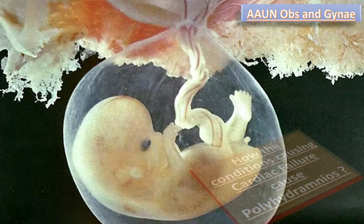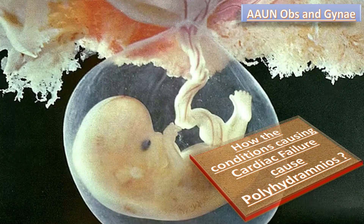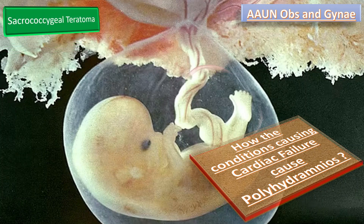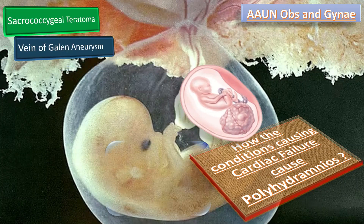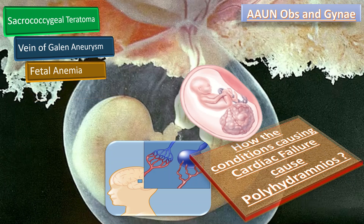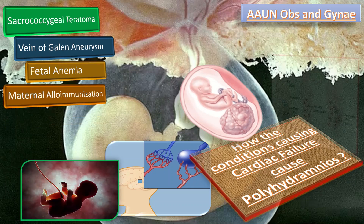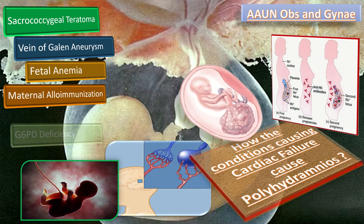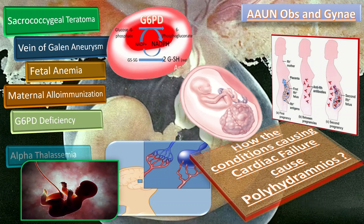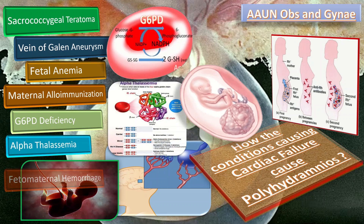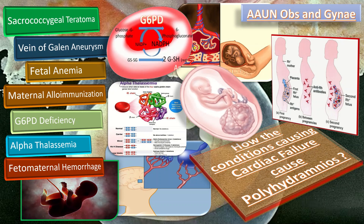How does cardiac failure cause polyhydramnios? In severe conditions like sacrococcygeal teratoma, vein of Galen aneurysm, fetal anemia, maternal alloimmunization, G6PD deficiency, alpha thalassemia, and fetal-maternal hemorrhage, there is high cardiac output leading to cardiac failure, resulting in increased urine production and ultimately increased production of amniotic fluid.